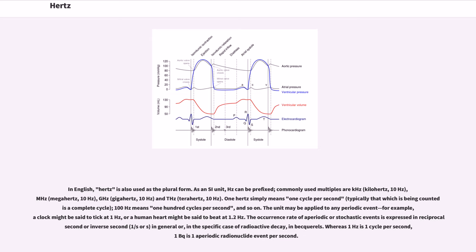One hertz simply means one cycle per second, typically that which is being counted as a complete cycle. One hundred hertz means 100 cycles per second, and so on. The unit may be applied to any periodic event. For example, a clock might be said to tick at 1 hertz, or a human heart might be said to beat at 1.2 hertz.